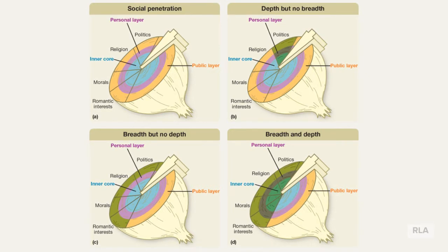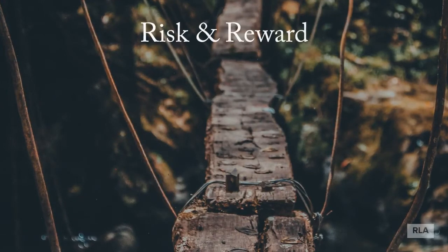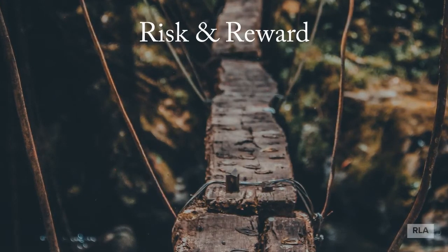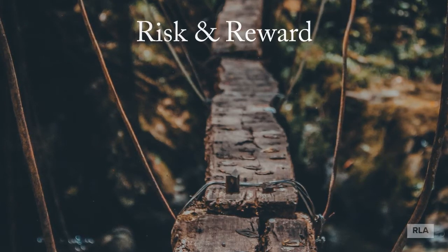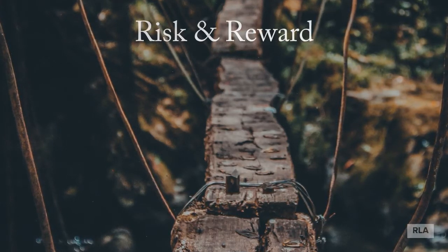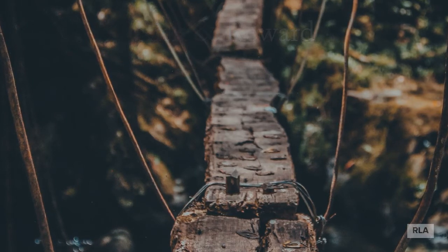You'll also notice in their model that Altman and Taylor label each layer of the onion from a public layer on the outside to an inner core that we very rarely share. So if self-disclosure leads to good relationships, why don't we disclose to everybody? Well, the reason is that disclosure comes with both risk and reward.